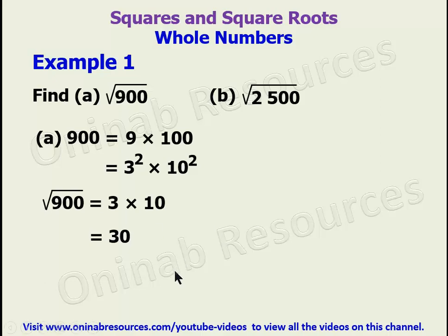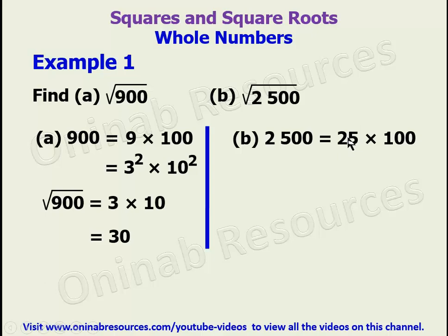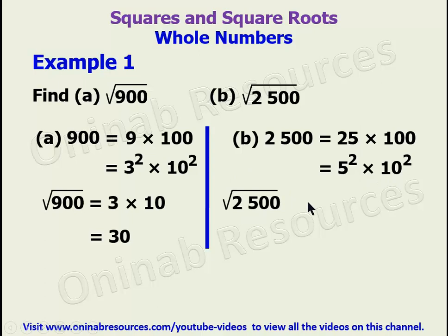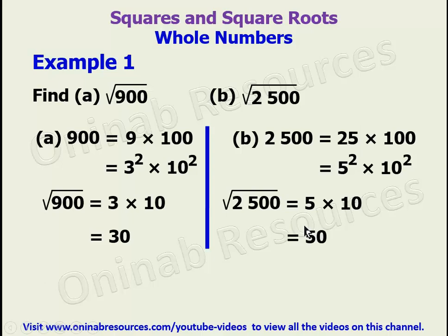So the square root of 900 is 3 times 10, which is 30. We go to part B: the square root of 2500. We write 2500 as 25 times 100. Twenty-five is a perfect square, written as 5 squared, and 100 is 10 squared. To get the square root of 2500, the square root of 5 squared is 5 (dividing the power 2 by 2 gives 1), and the square root of 10 squared is 10. Therefore the square root of 2500 is 5 times 10, which is 50.